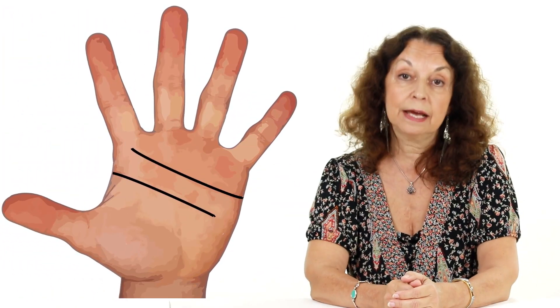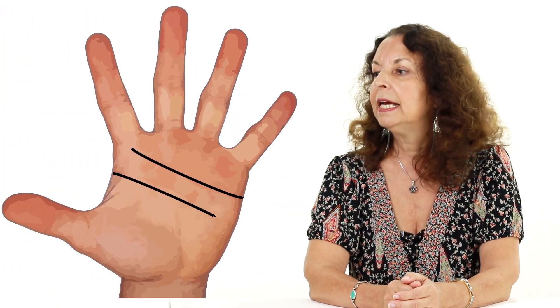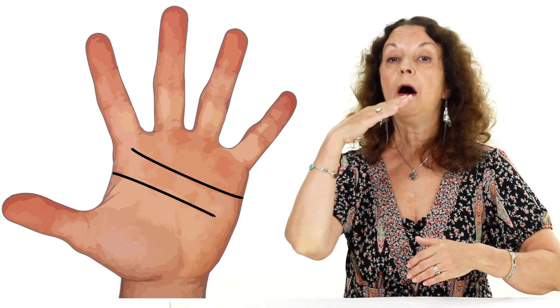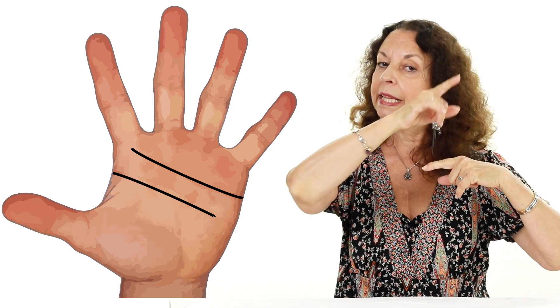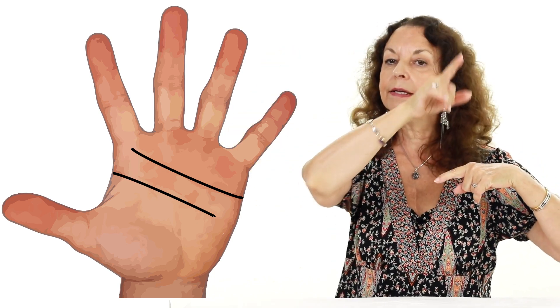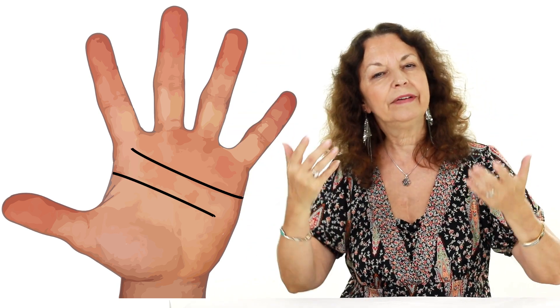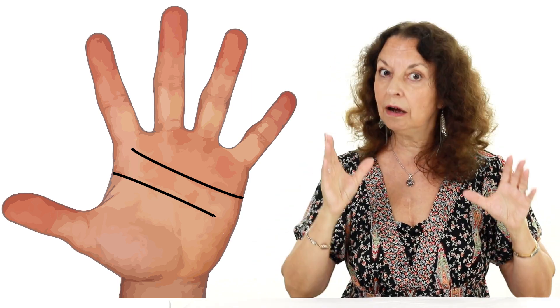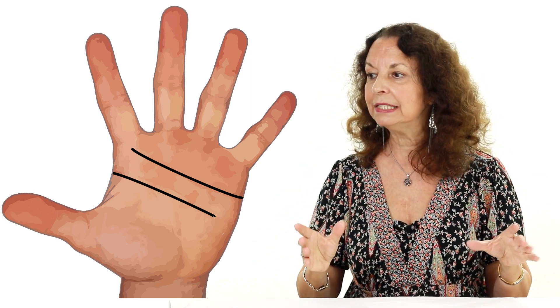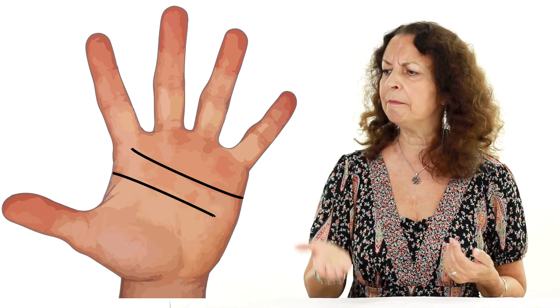The first example that I'm going to show you is when both heart and head are straight. When the lines are curved, it means that we are very flexible. But when the lines are straight, we are lacking in flexibility. So we tend to think in black and white.